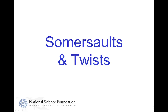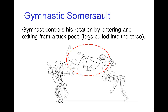Somersaults and twists. It's common in a jump to have a rotation of the character, like we see in this example of a gymnastic somersault. And when we have this kind of rotation, often the pose of the character changes in order to control the rotation.